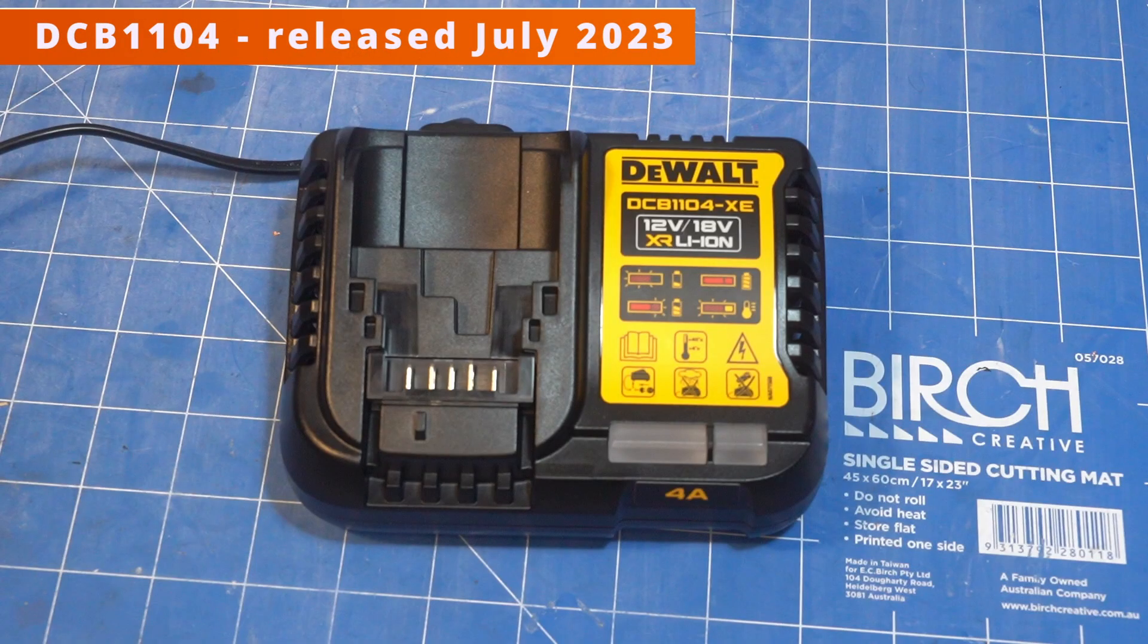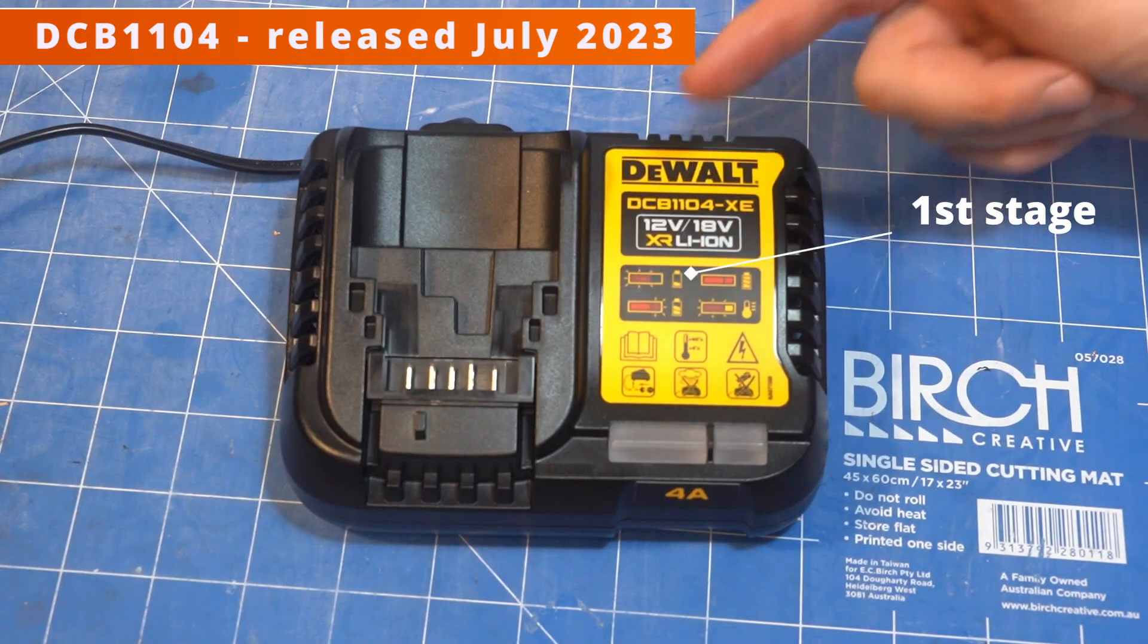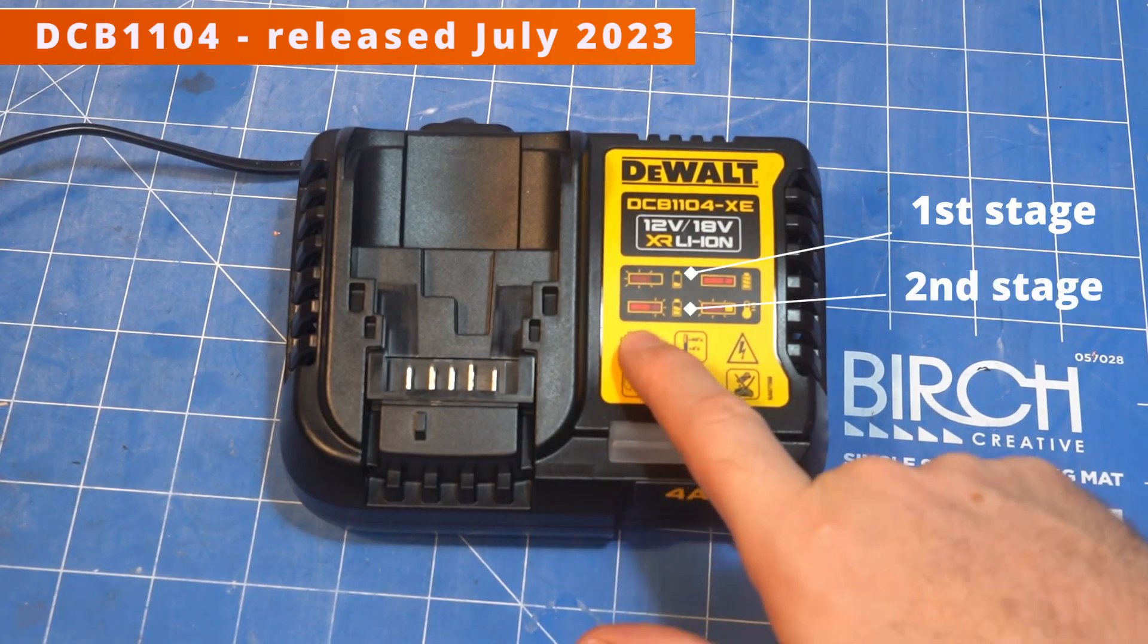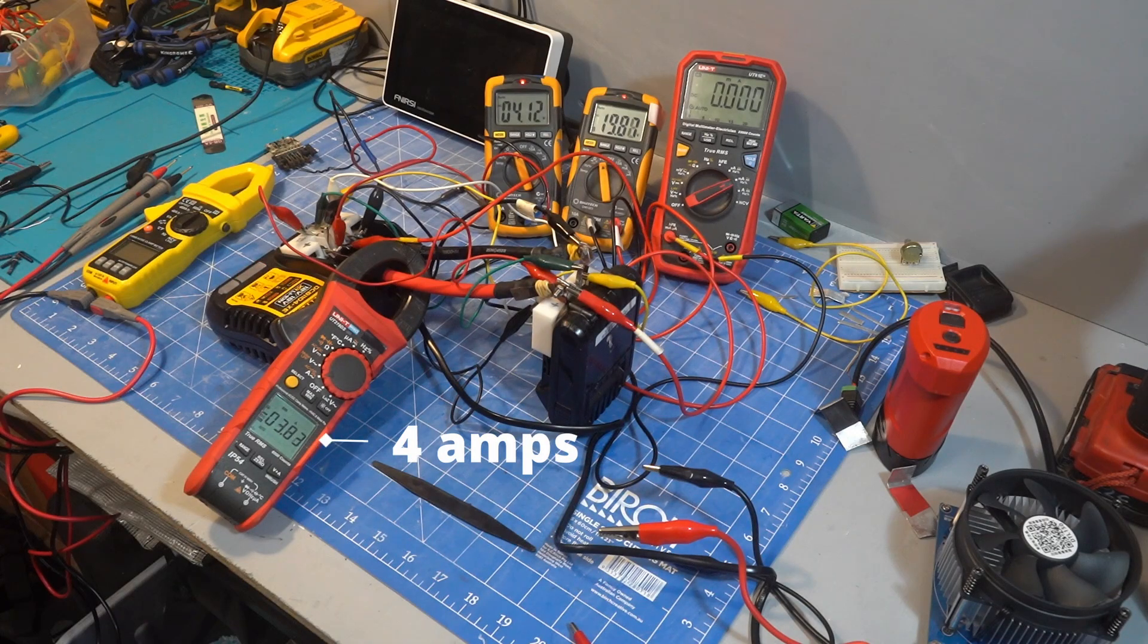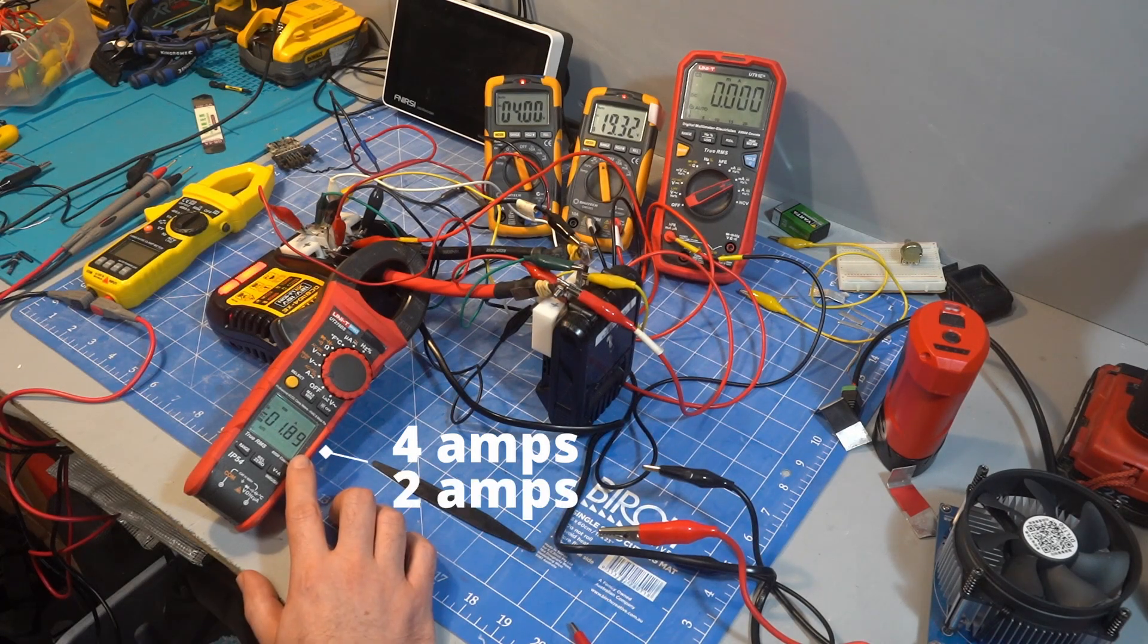I also bought the new DCB1104 as it's a new charger that was released in July 2023 and is advertised as having 2 stage charging. I'm in 240 volt land so it doesn't say 2 stage on the sticker but the images imply the same thing. This charger charged at 4 amps then changed to 2 amps then stopped.